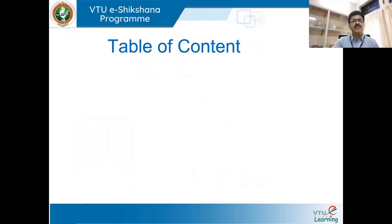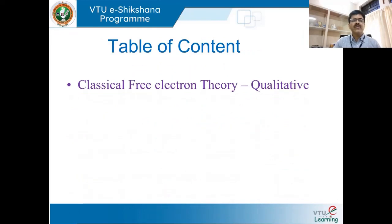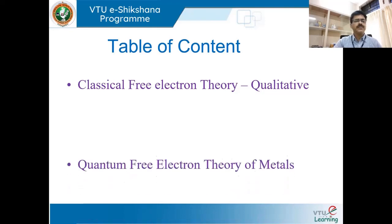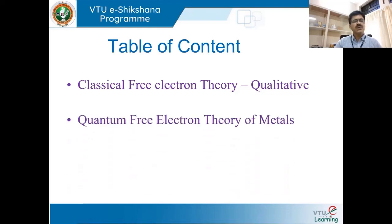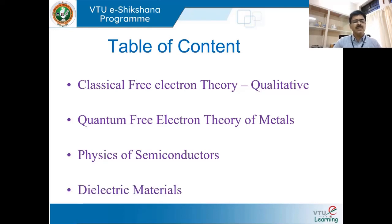First, let us look into the table of contents of the topic. In this topic, we deal with classical free electron theory, a classical approach. The second topic is the quantum free electron theory of metals. The third is physics of semiconductors, and the last topic is material science. These are the four topics we are covering in Module 5.